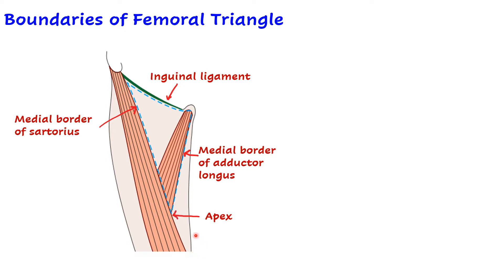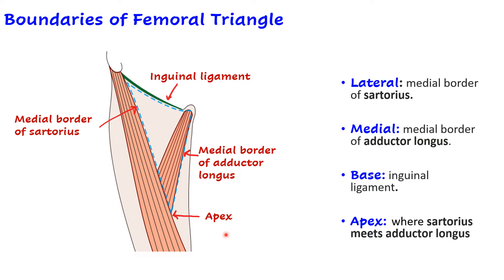The apex is where sartorius meets adductor longus - that is where the lateral boundary meets the medial boundary. So to summarize: the lateral boundary is formed by the medial border of sartorius, the medial boundary is formed by the medial border of adductor longus, the base is formed by the inguinal ligament, and the apex is where sartorius meets adductor longus.